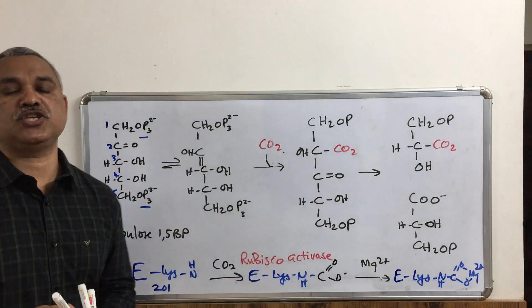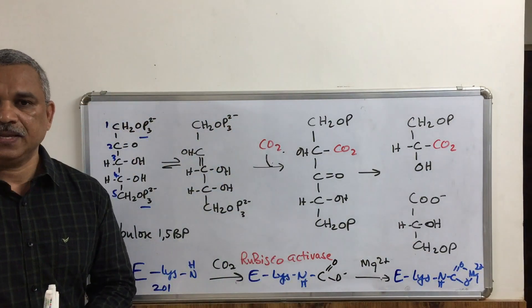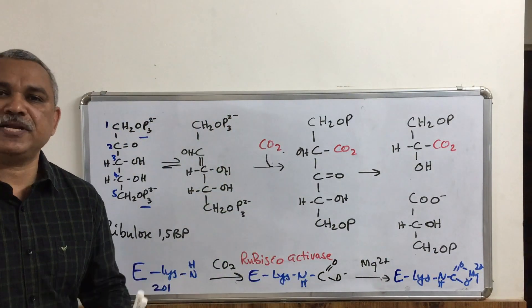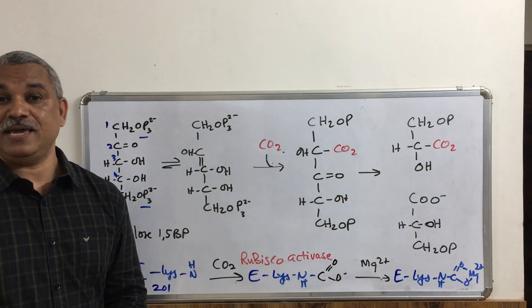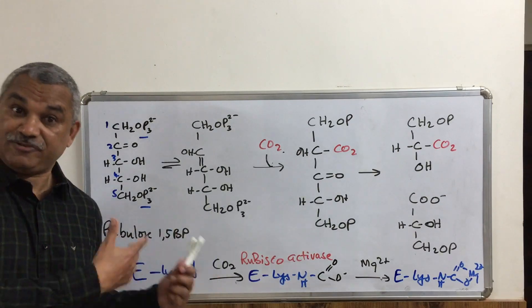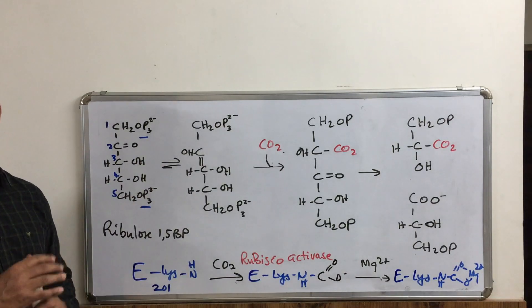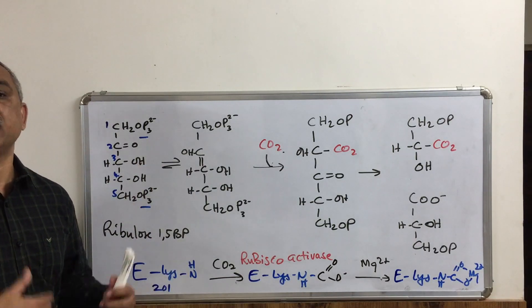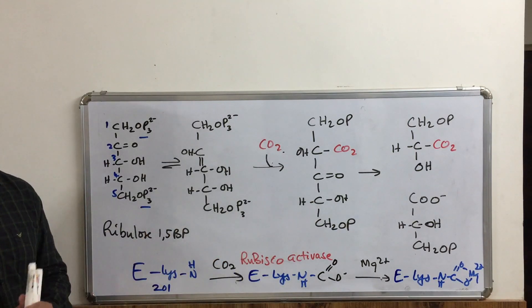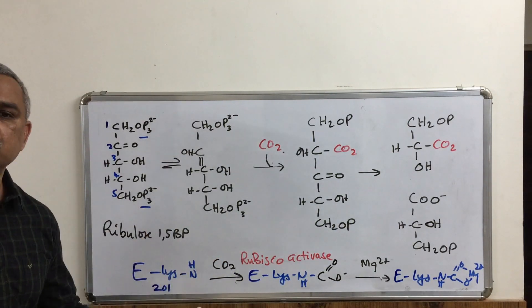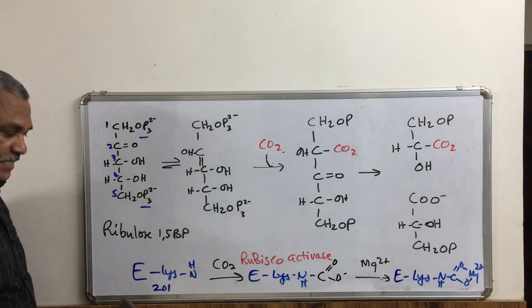Rubisco Activase activates the Rubisco enzyme. This activation is dependent on the pH of the system and on light — the enzyme is activated only when there is light. When we deal with the regulation of photosynthesis, we will return to this topic. For now, we must know that Rubisco Activase is required to activate Rubisco.